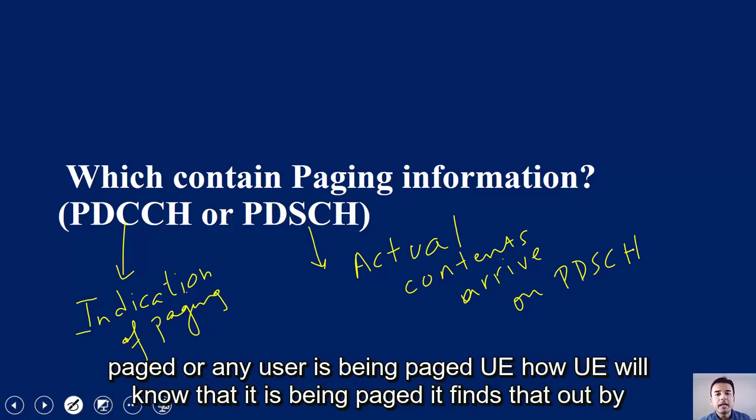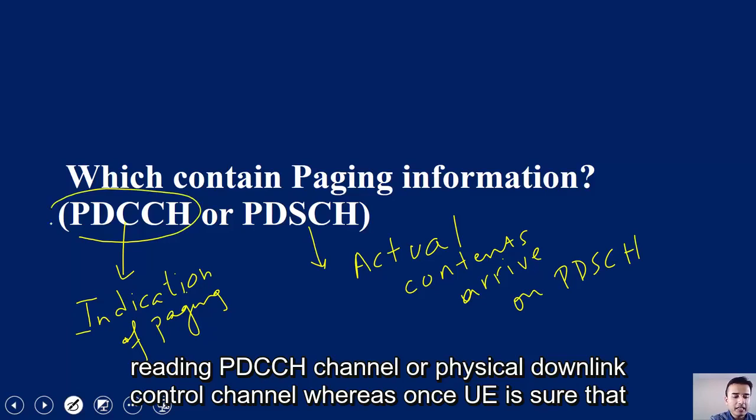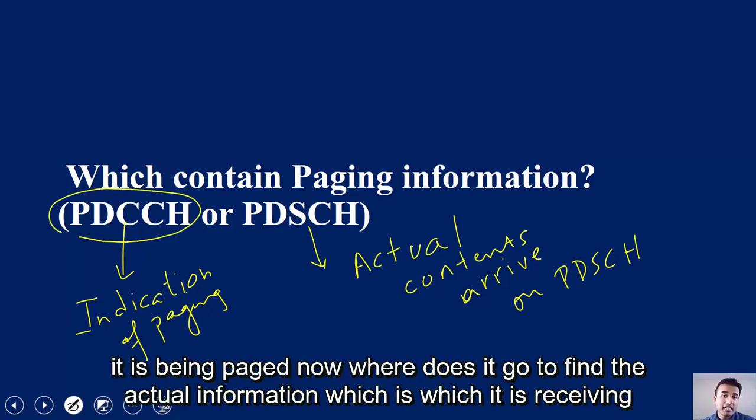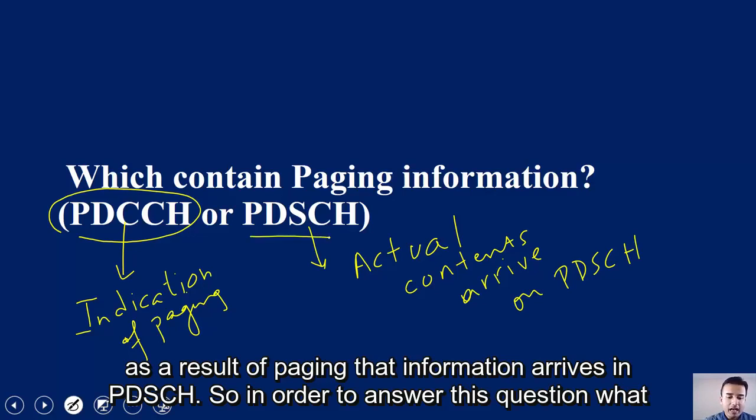How will UE know that it is being paged? It finds that out by reading PDCCH channel or physical downlink control channel. Whereas once UE is sure that it is being paged, where does it go to find the actual information which it is receiving as a result of paging? That information arrives in PDSCH.